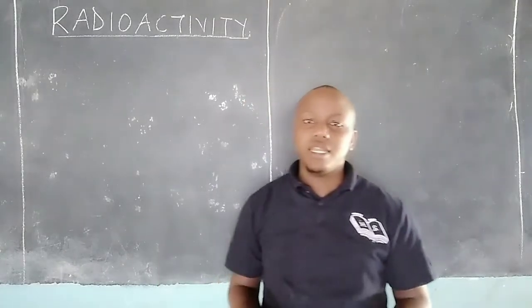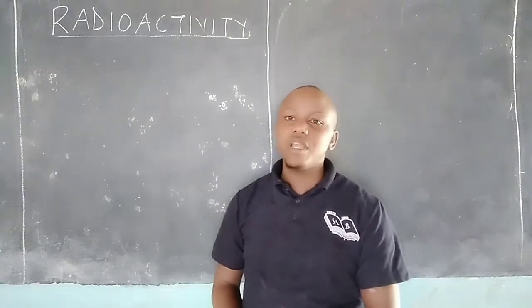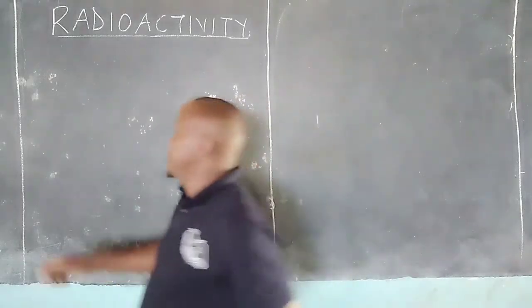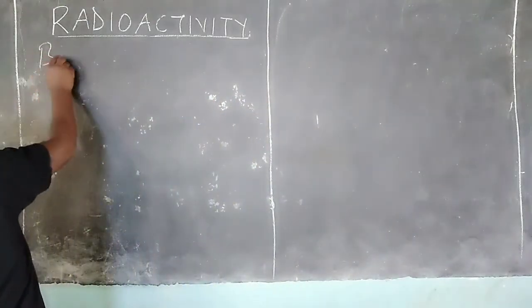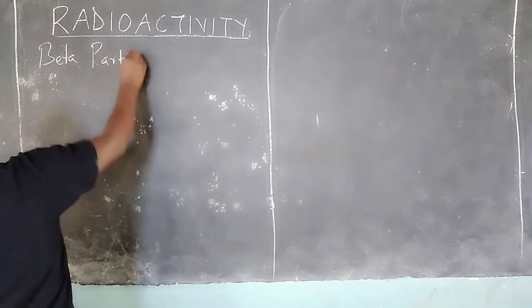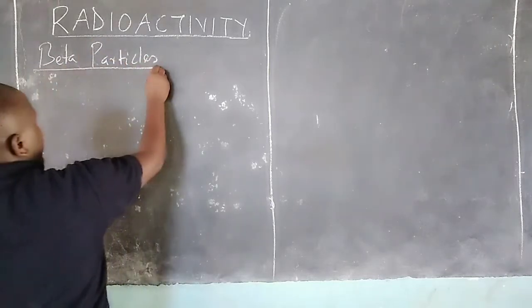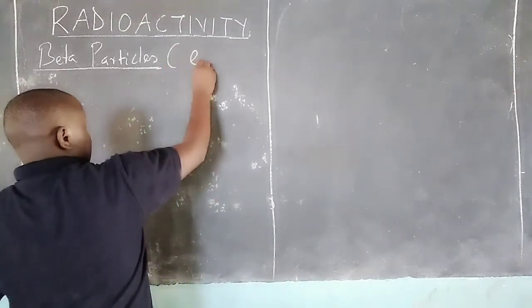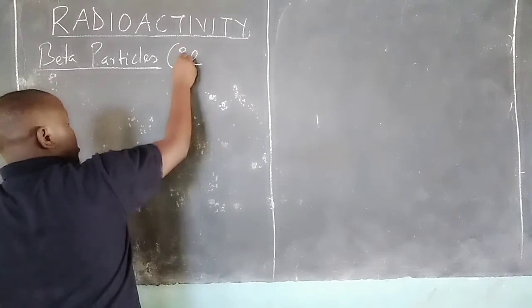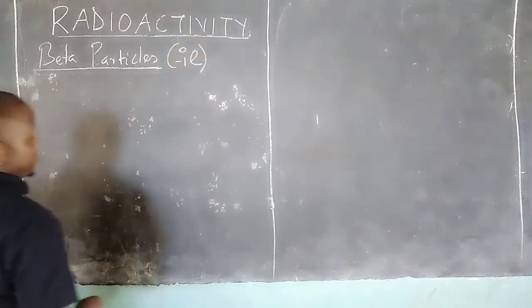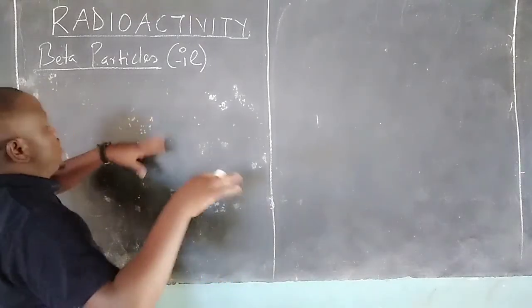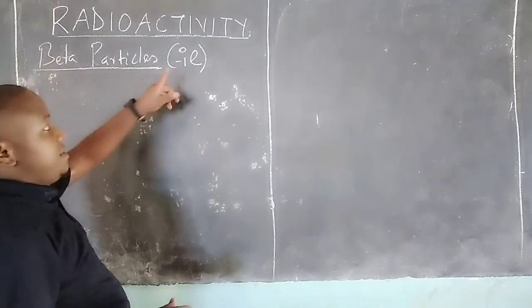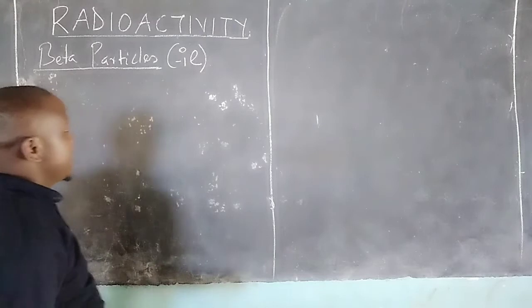We have seen alpha particles, and they wanted us in this session to look at beta particles. When a nuclide disintegrates by the release of beta particles, we should say it is just an electron which has been released. When the particles released during beta radiation are studied, they are discovered to be just electrons.